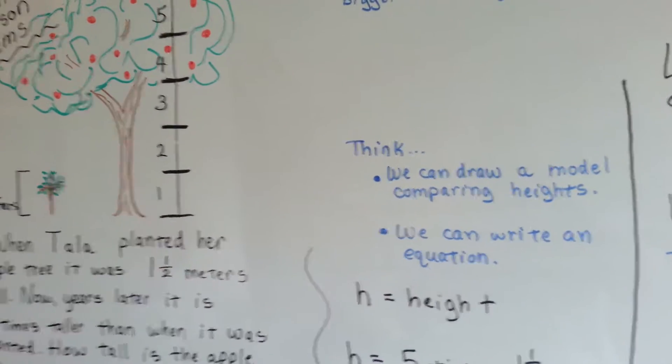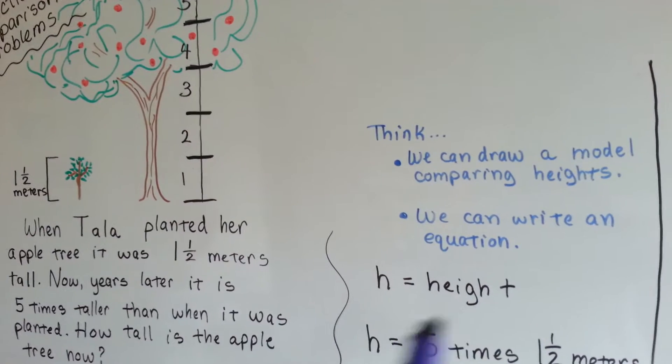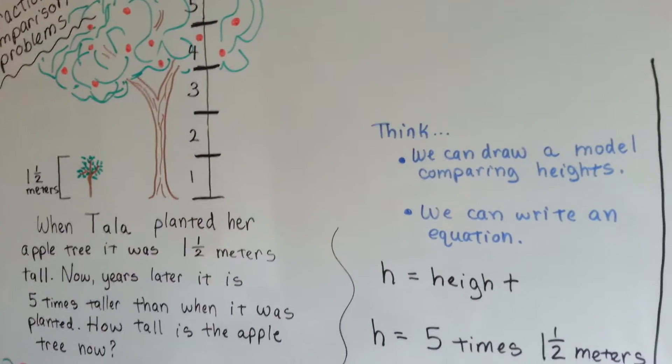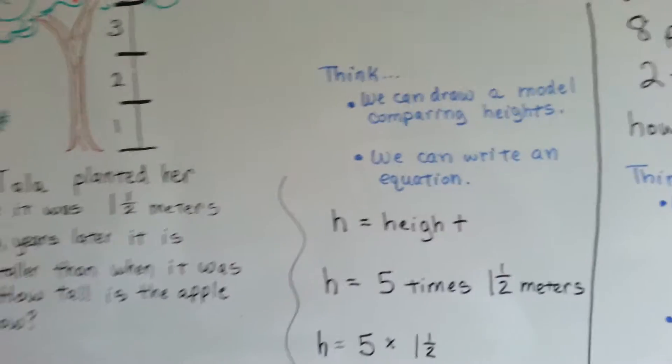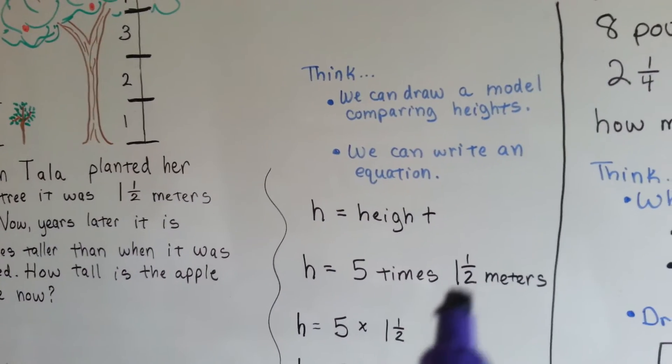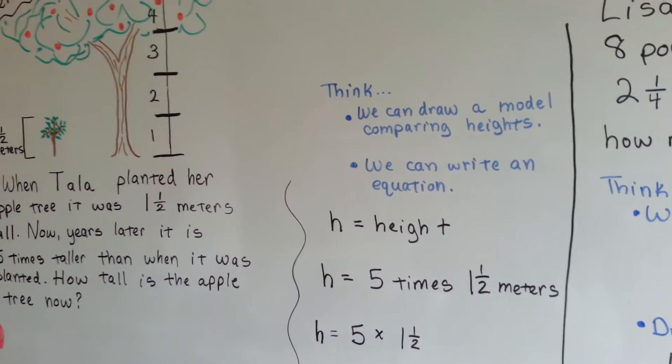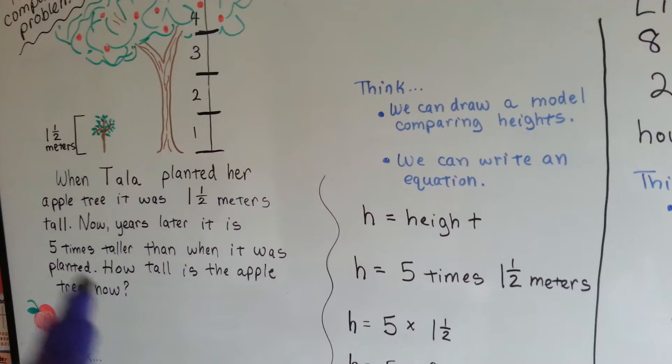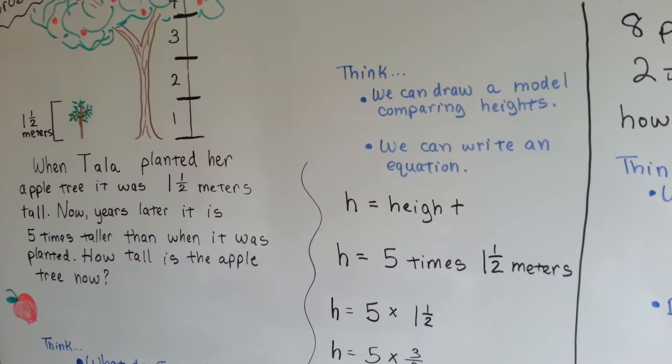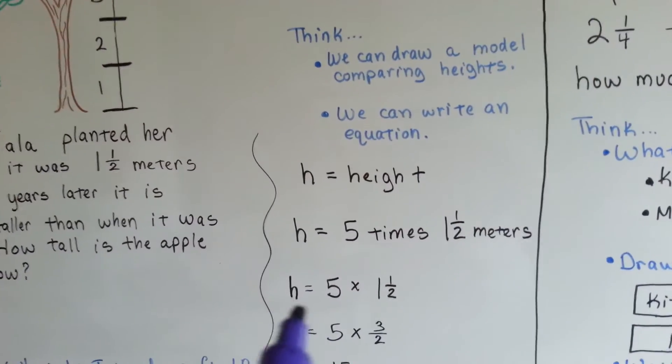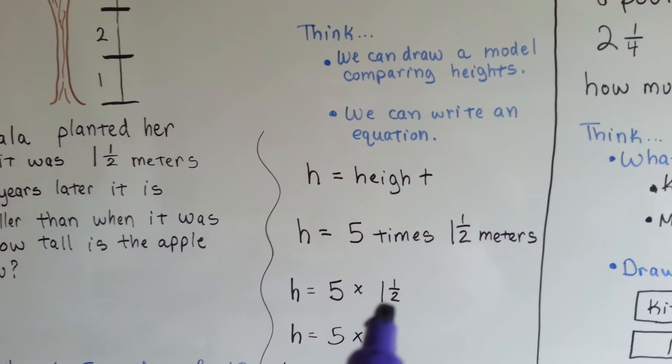We can write an equation with h equaling the height of the big tree now. The height is five times one and a half meters, because it was one and a half meters when planted, and now it's five times that. So h equals five times one and a half.